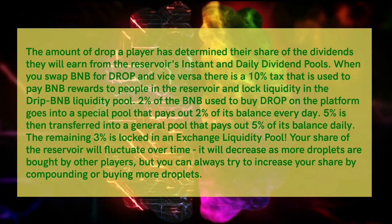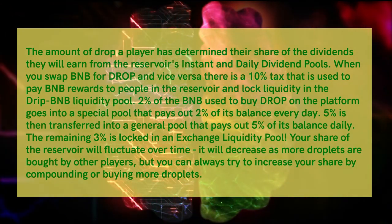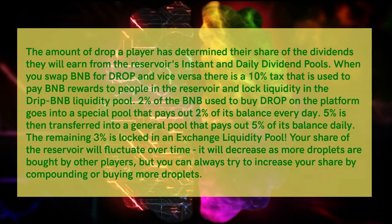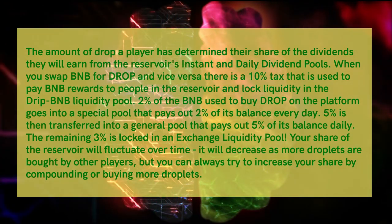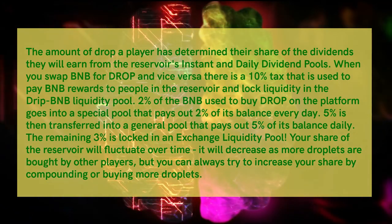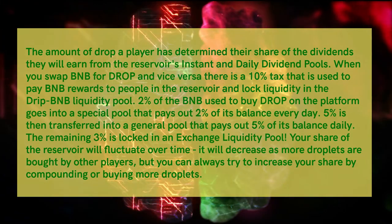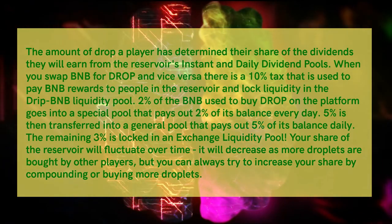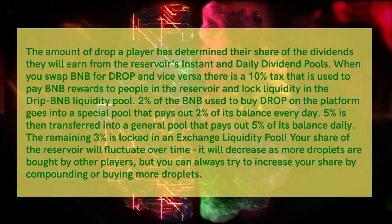When you swap BNB for DROP and vice versa, there is a 10% tax used to pay BNB rewards to people in the Reservoir and lock liquidity in the DRIP/BNB liquidity pool. 2% of the BNB used to buy DROP goes into a special pool that pays out 2% of its balance every day. 5% is transferred into a general pool that pays out 5% of its balance daily, and the remaining 3% is locked in an exchange liquidity pool. Your share of the Reservoir will fluctuate over time, decreasing as more DROP tokens are bought by other players, but you can always increase your share by compounding or buying more DROP tokens.